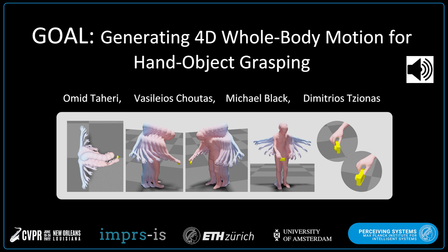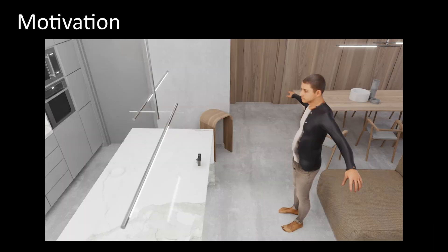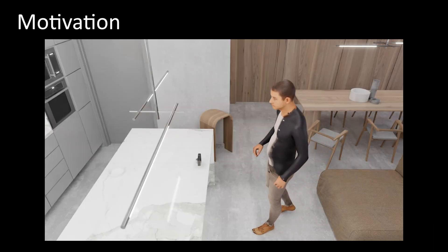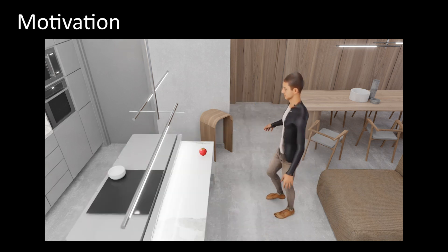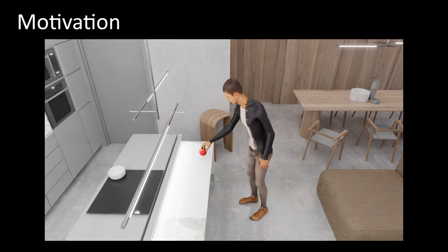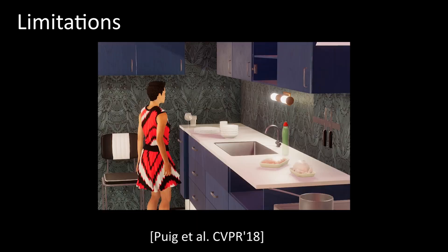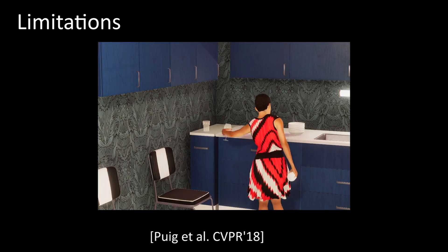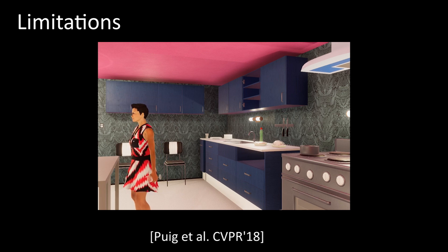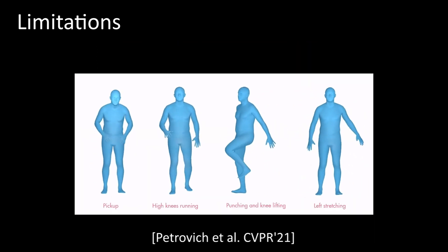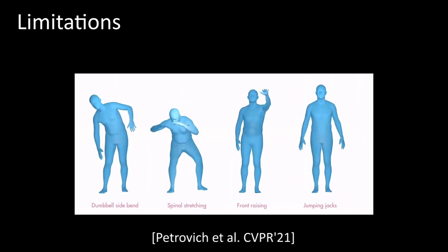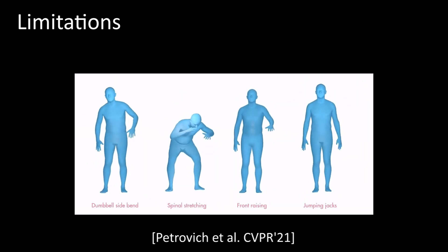We present GOAL, a deep learning model for generating whole-body motions that walk and grasp 3D objects. Digital humans that move and interact realistically with 3D scenes are important for movies, games, AR, VR, and the metaverse. If their motion is not natural, avatars quickly fall into the uncanny valley. Most existing methods focus on bodies in isolation and ignore interaction with objects.